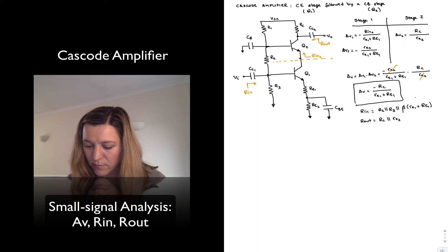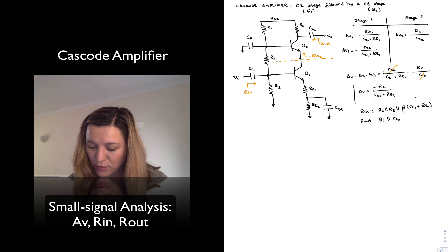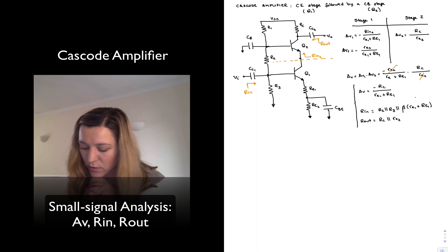And that's it. We've come up with expressions for small signal voltage gain, input resistance, and output resistance for a cascode amplifier.